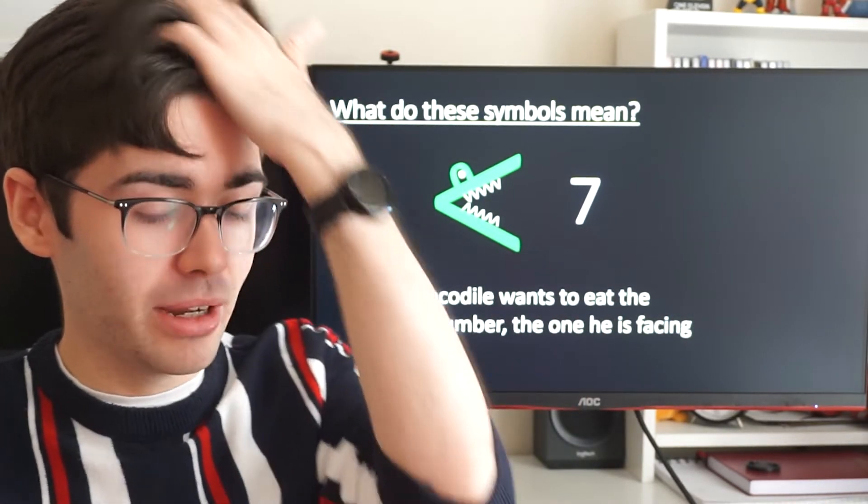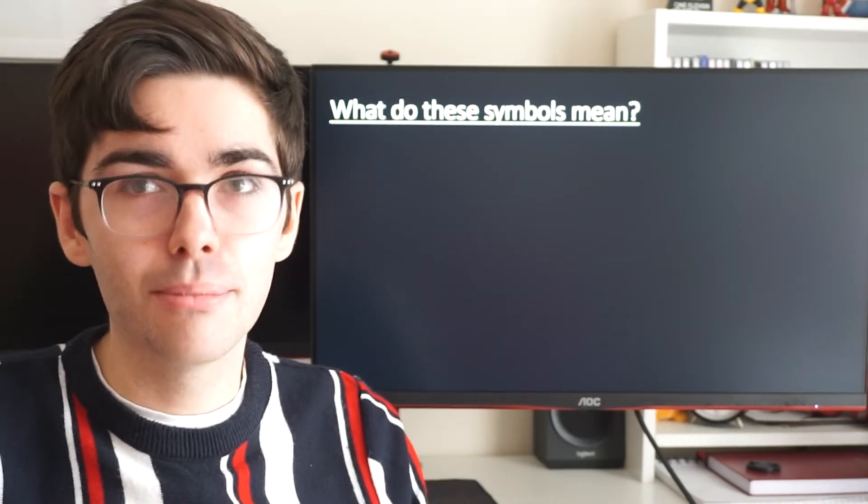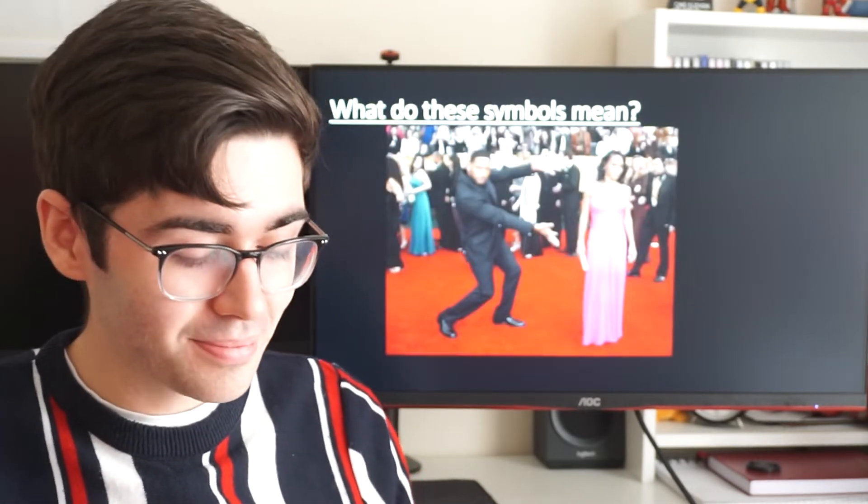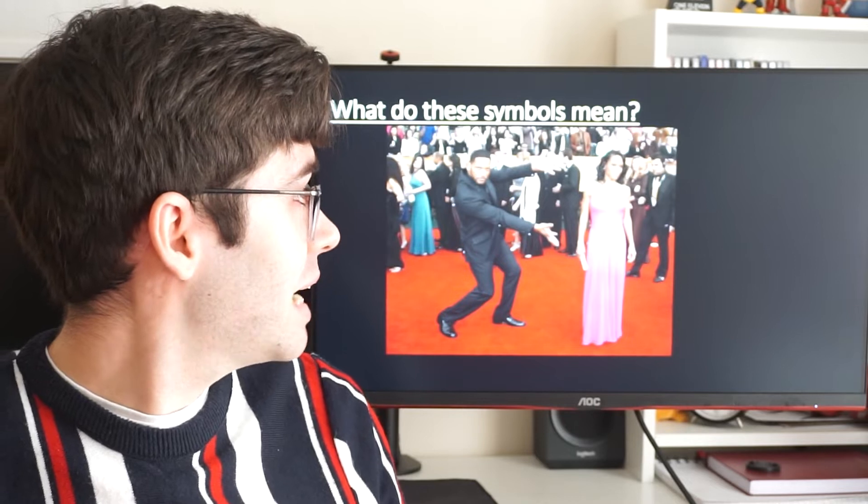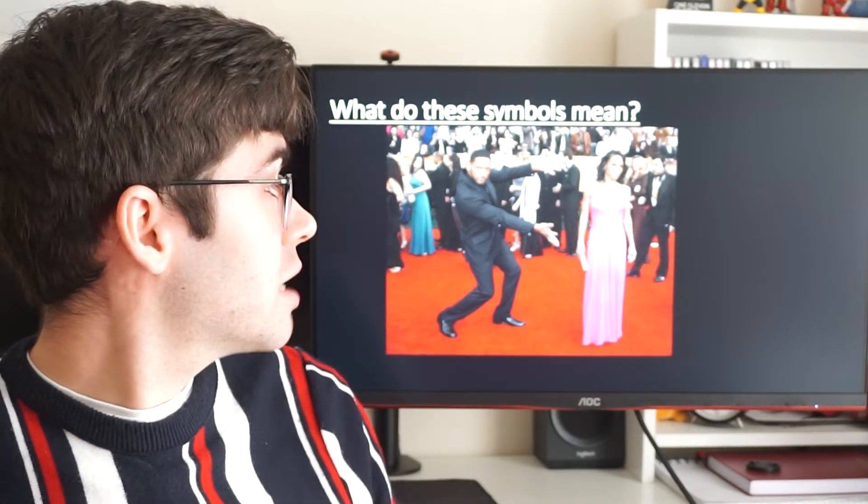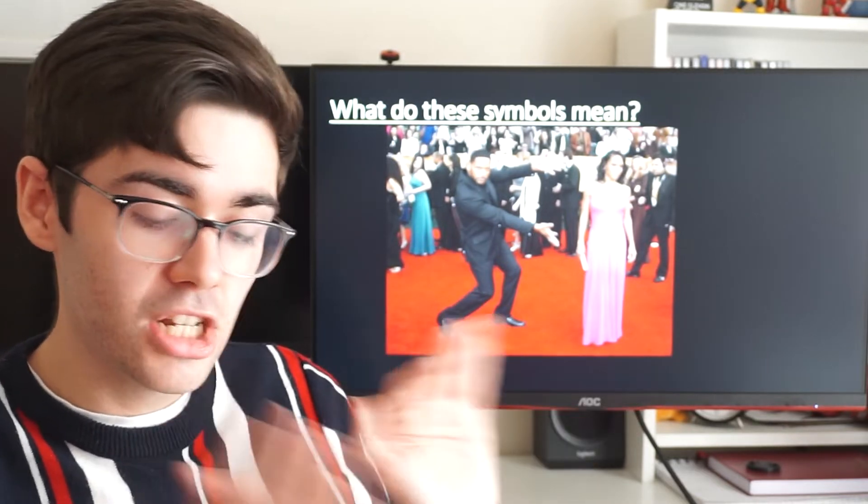I have one more way of remembering it. This one I'm very proud of, I came up with this by myself. So when I see these symbols, I'm reminded of a meme of Will Smith on a red carpet with his wife. The photo is here. And the question is, why is he pointing to her like that? He's pointing to her like that because she looks great and she is great. He's showing off his wife and he's saying, she is great.